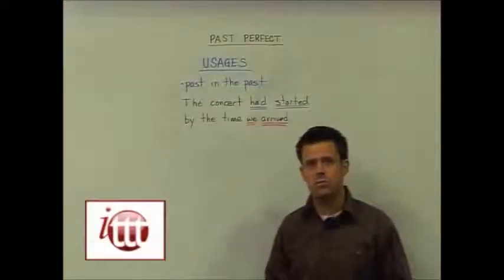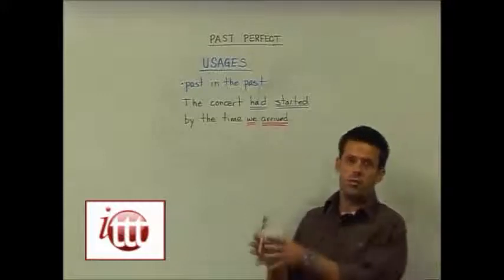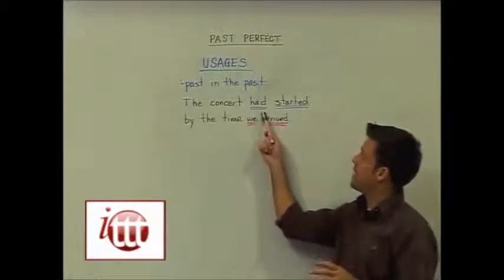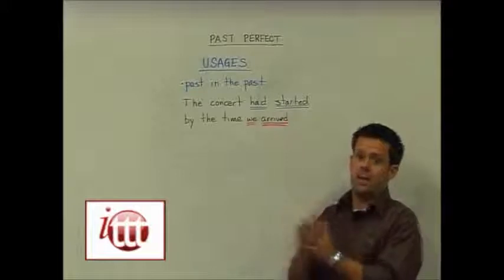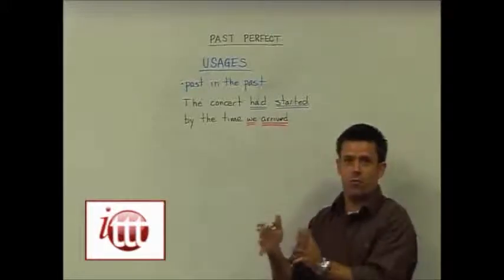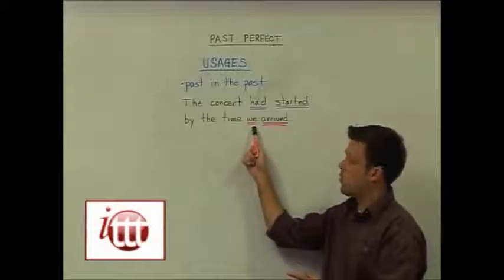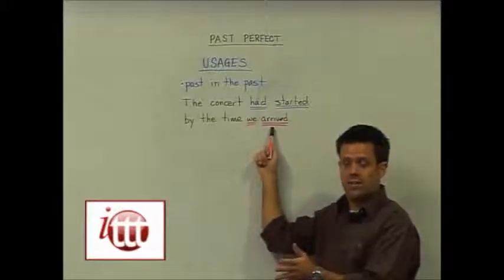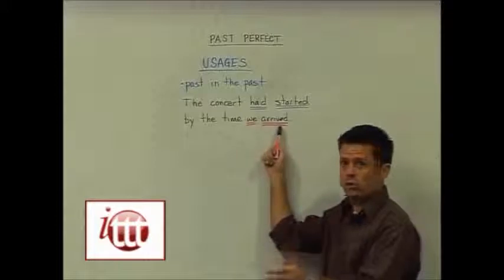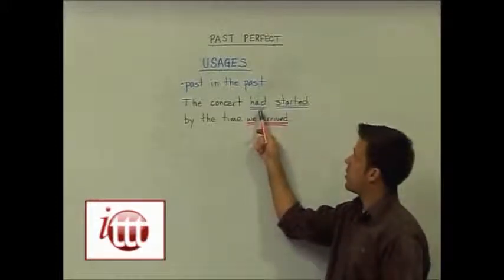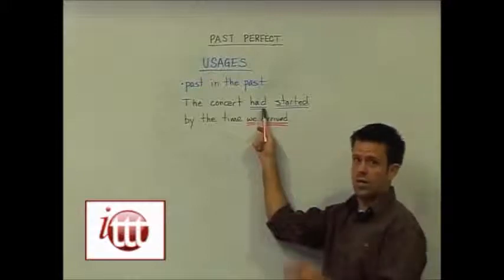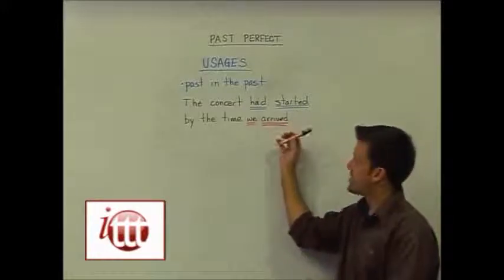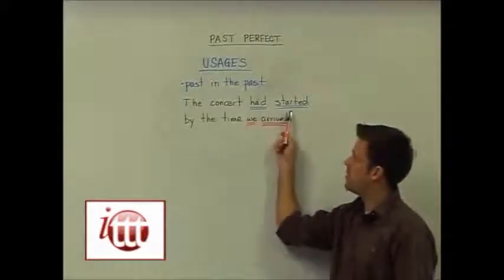The usage for the past perfect is to relate two past actions, always using the past perfect for the action that happened before the other past action. For example, I want to say we arrived in the past, but I also want to indicate something happened even before we arrived, so I use the past perfect. The resulting sentence could be 'The concert had started by the time we arrived.'